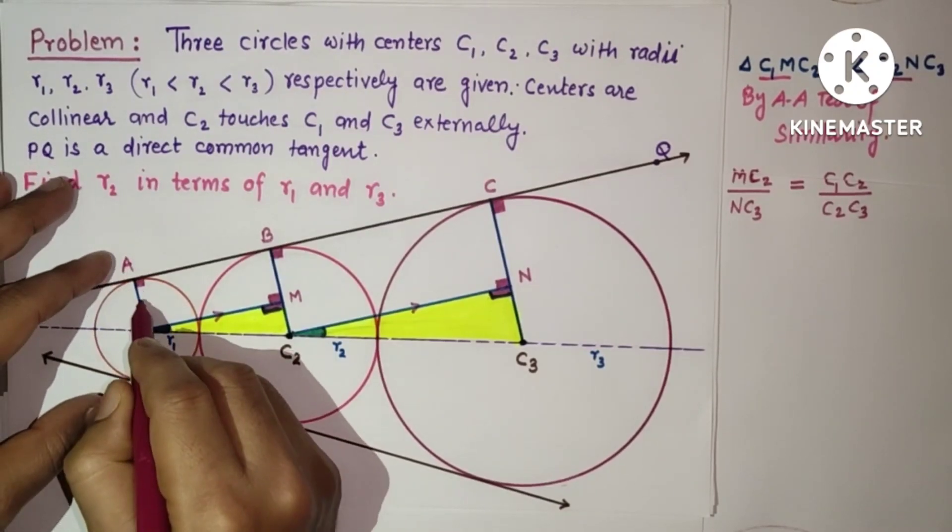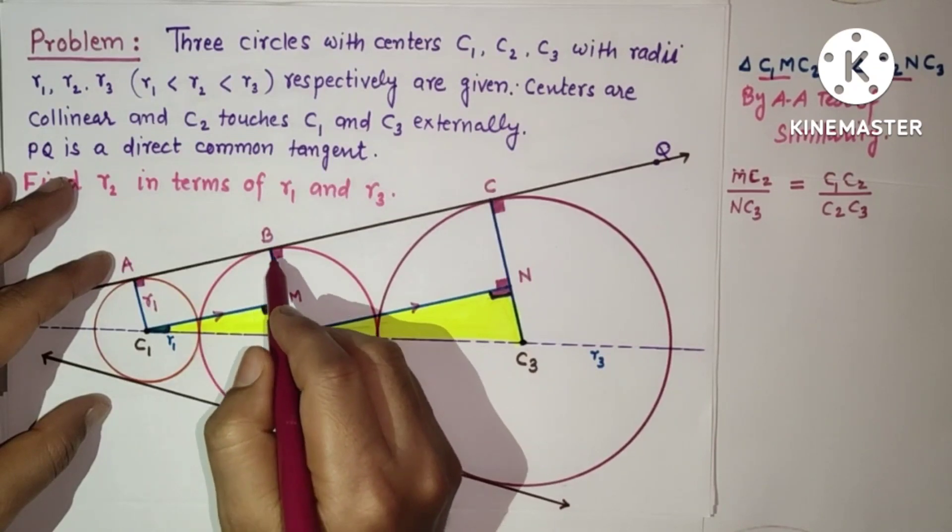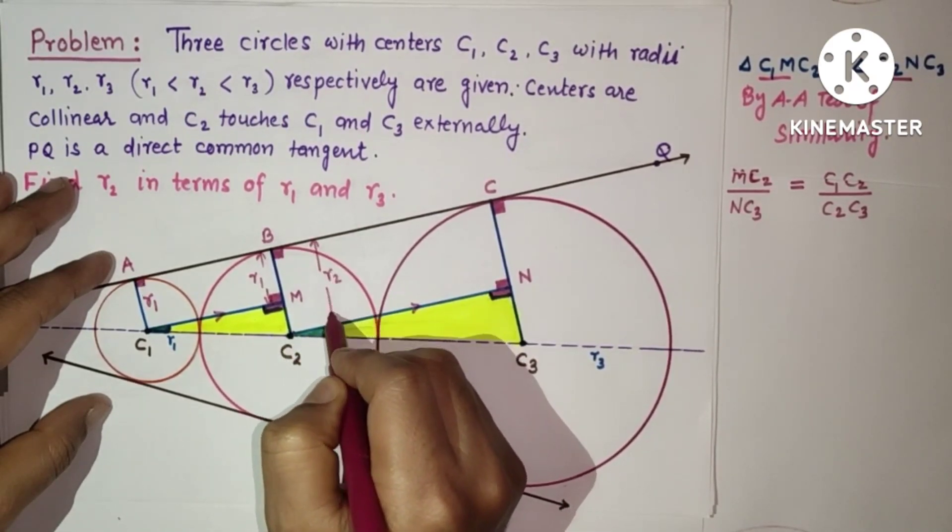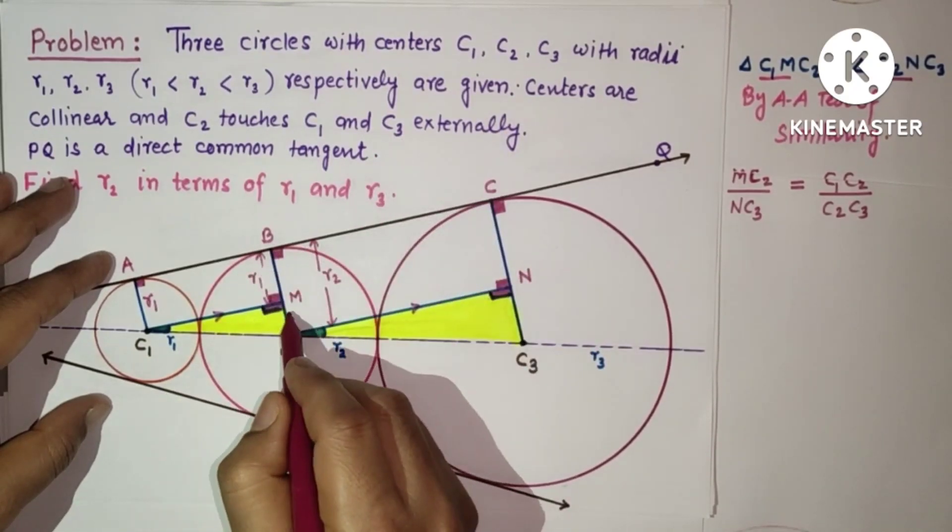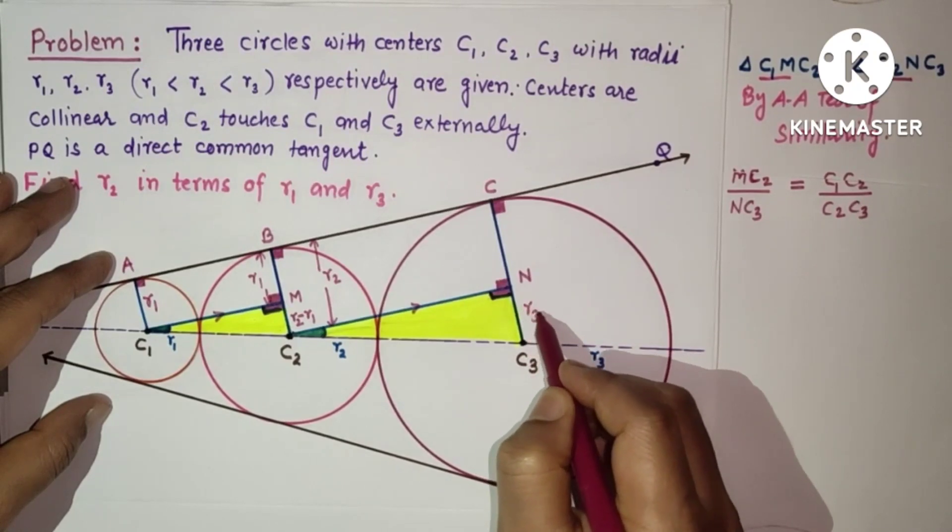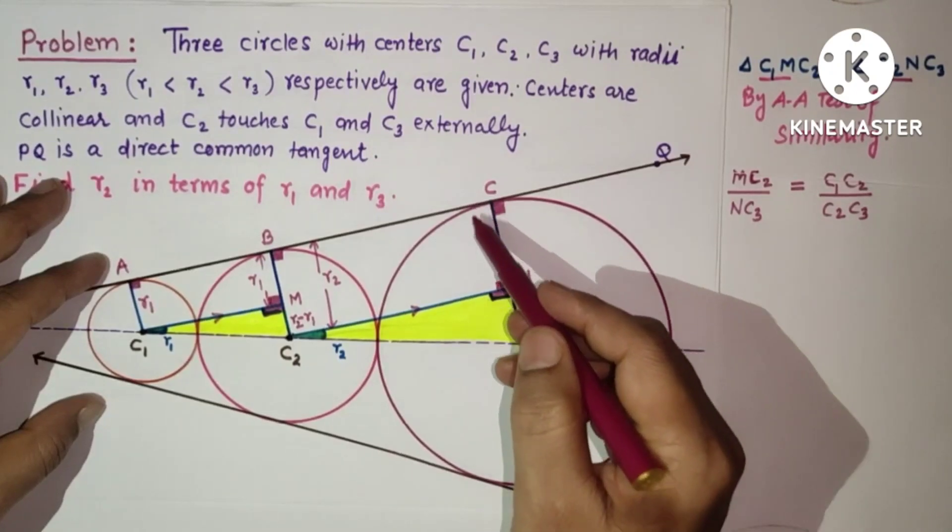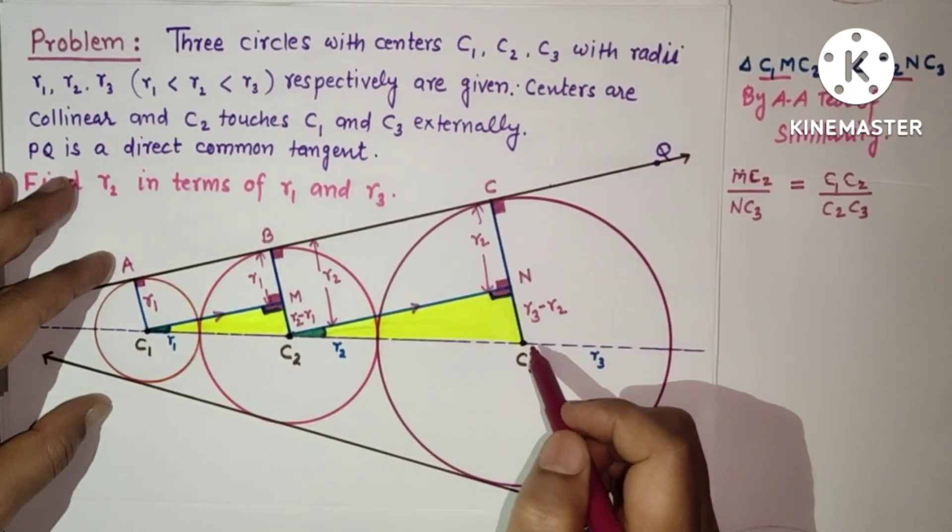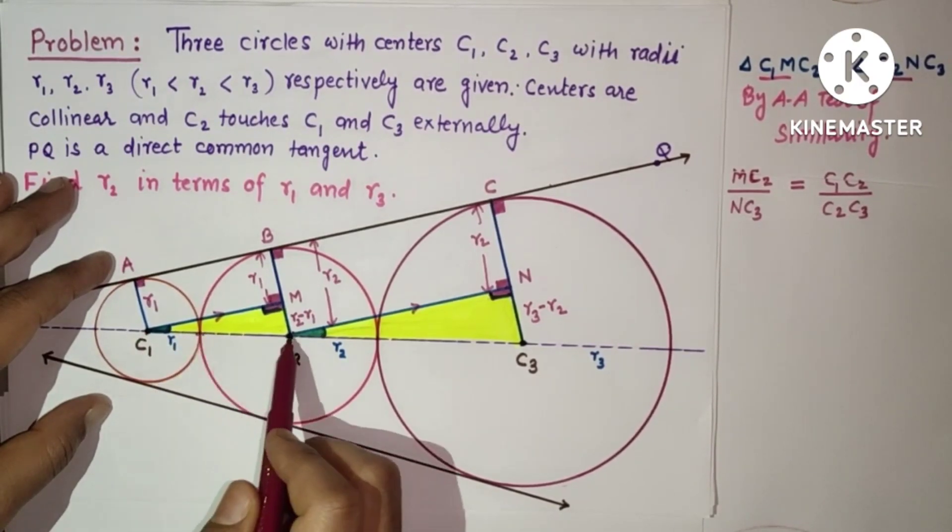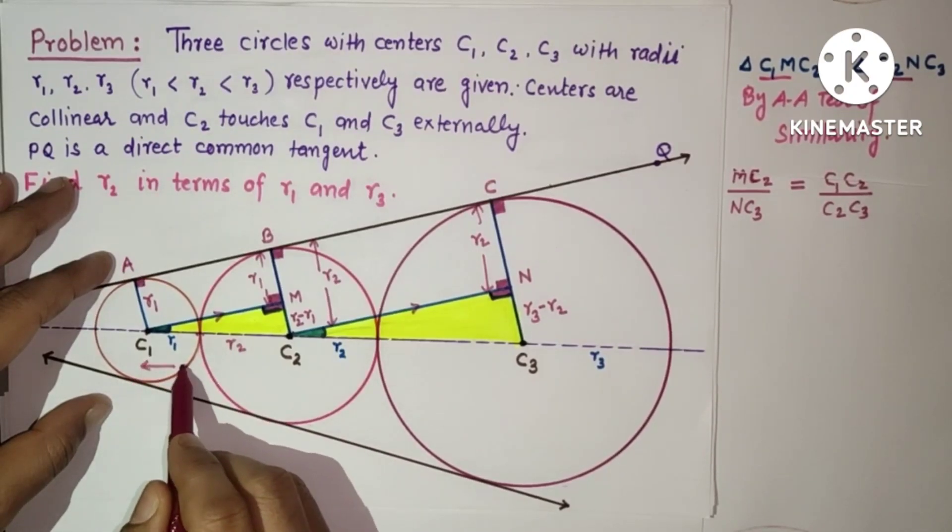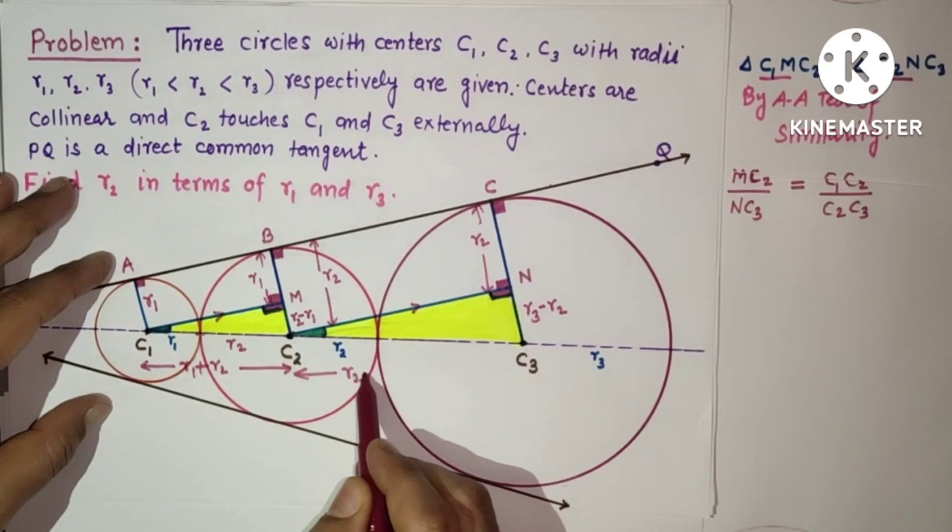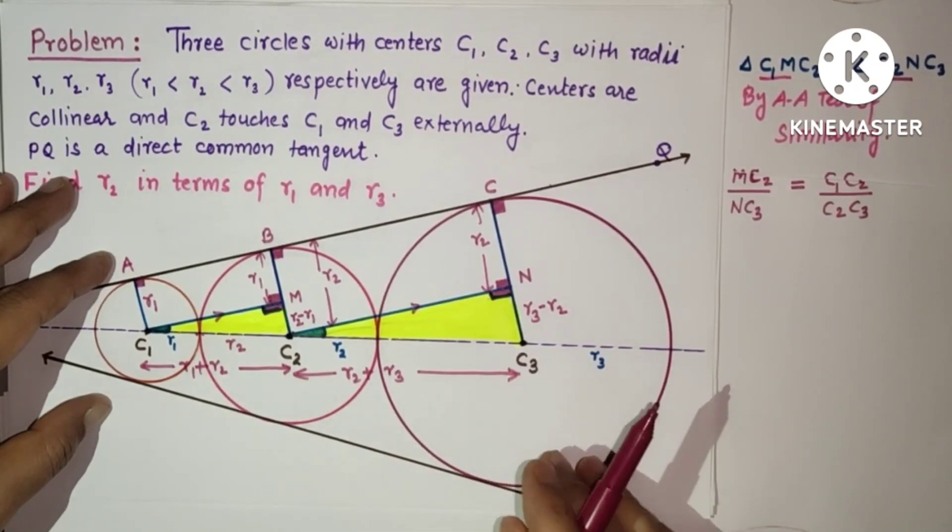Now this is R1 and this full thing is R2, so from here to here this is R1 only, and from here to here it is R2. So to get this NC3, subtract R2 from R3. So R3 minus R2 will be NC3. This from here to here is R2, from here to here is R1, and from here it is R2. So C1C2 will be R1 plus R2, and similarly C2C3 will be R2 plus R3.